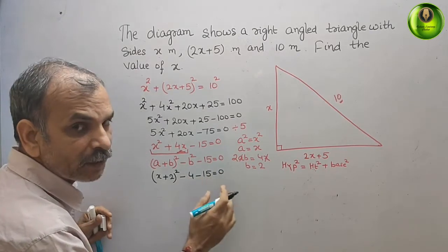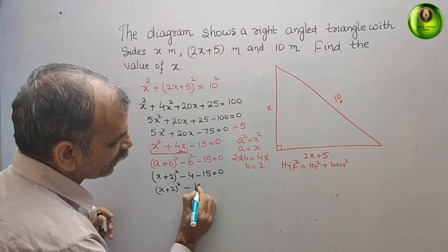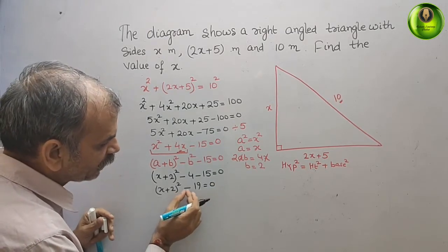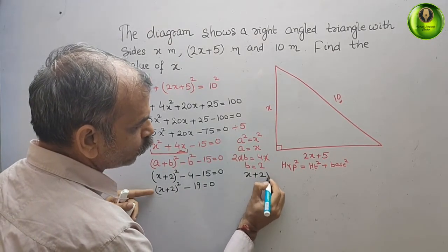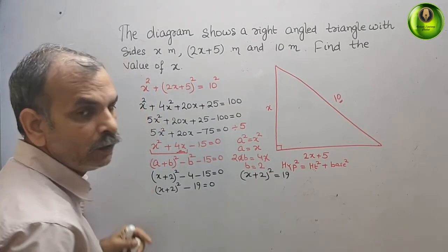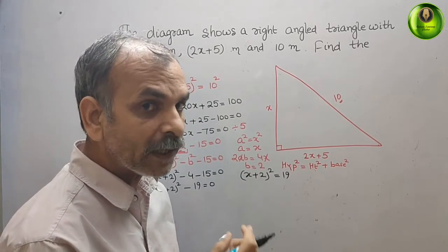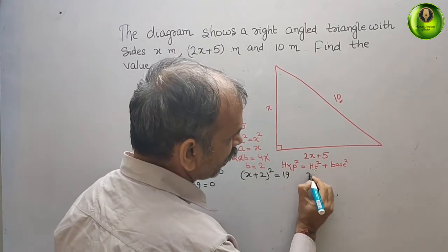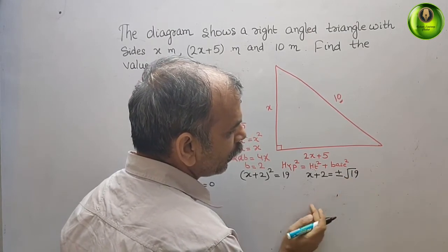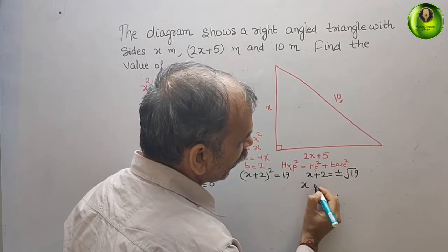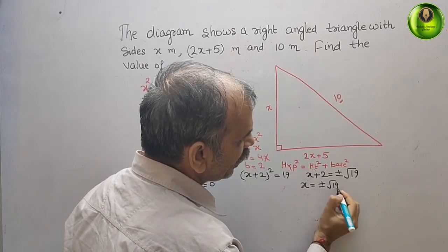Minus 4 minus 15 is minus 19, so (x plus 2) whole squared minus 19 equals 0. Bringing minus 19 to the right side, we get (x plus 2) whole squared equals 19. Therefore x plus 2 equals plus or minus root 19, which gives x equals plus or minus root 19 minus 2.